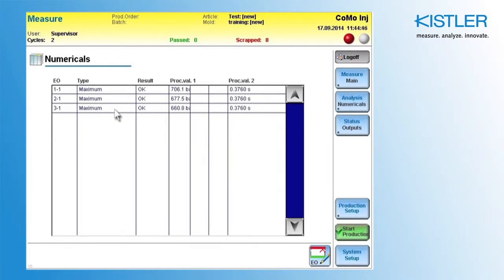In this example, there are three maximum EOs. The screen shows the evaluation result of the last cycle. In this example, everything is OK.